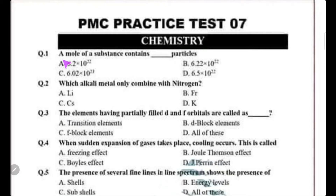Practice test 7 by PMC. The first question: a mole of a substance contains how many particles? That is Avogadro's number. The current Avogadro number is 6.02 × 10²³, so choice C is correct.